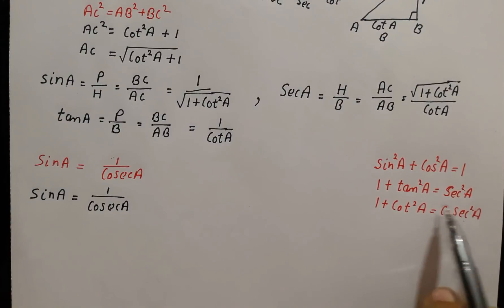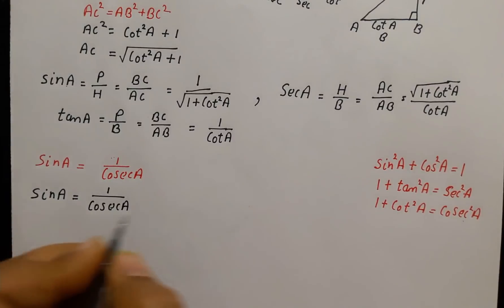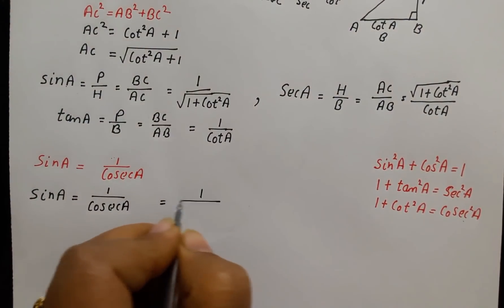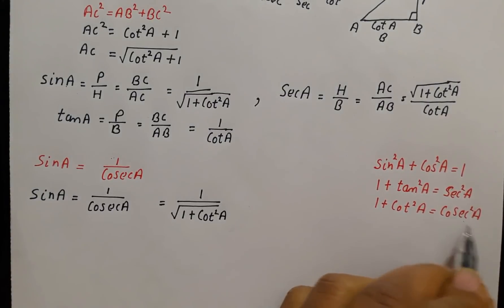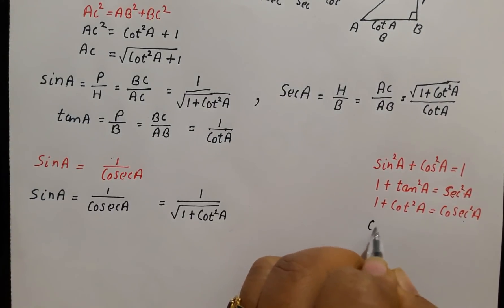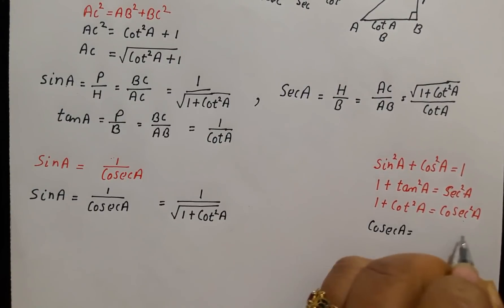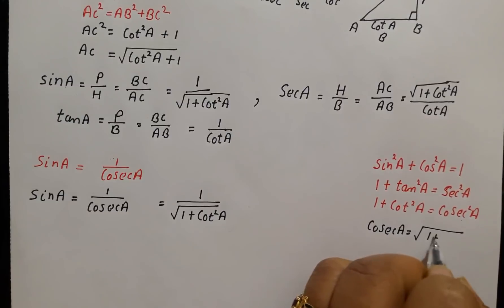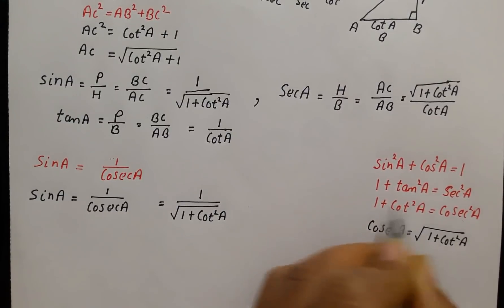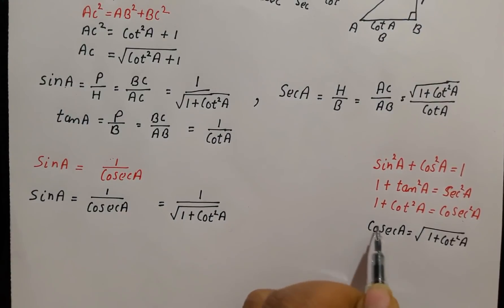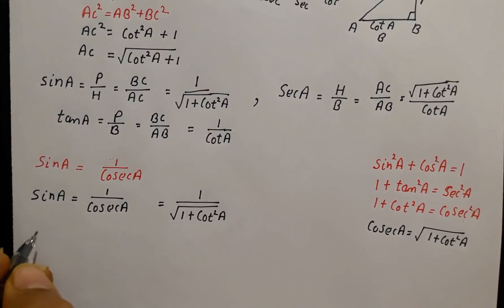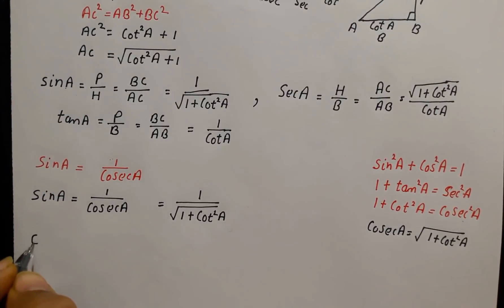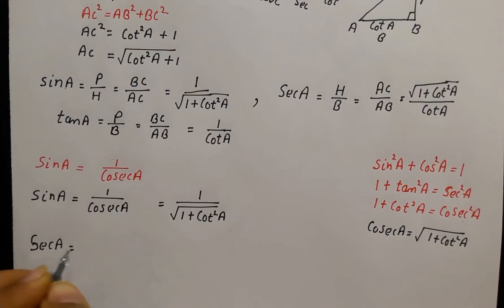From the identity cosec²A = 1 + cot²A, cosec A = √(1 + cot²A). Therefore sin A = 1 / cosec A = 1 / √(1 + cot²A). For sec A, we use the identity sec²A = 1 + tan²A, which gives sec A = √(1 + tan²A).